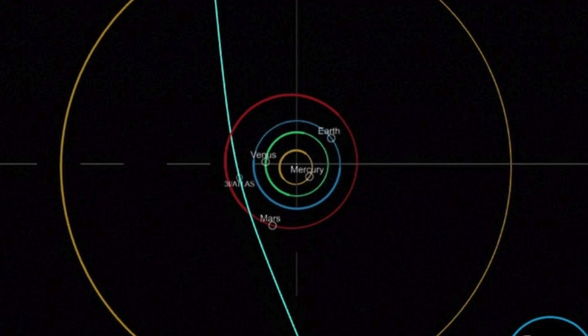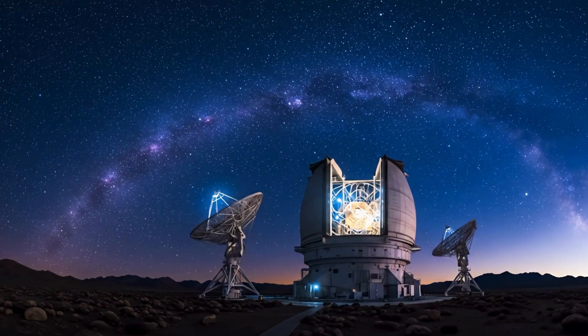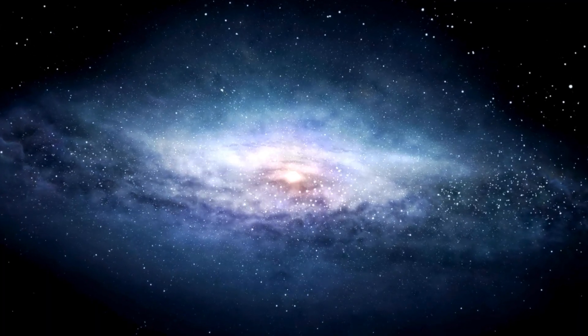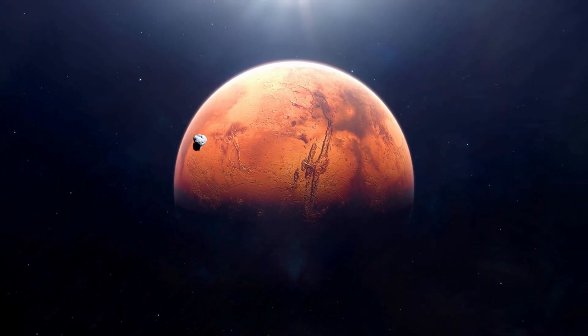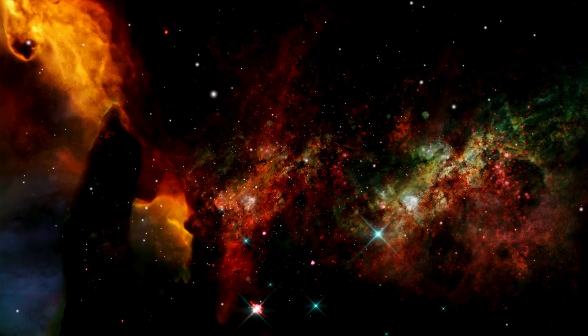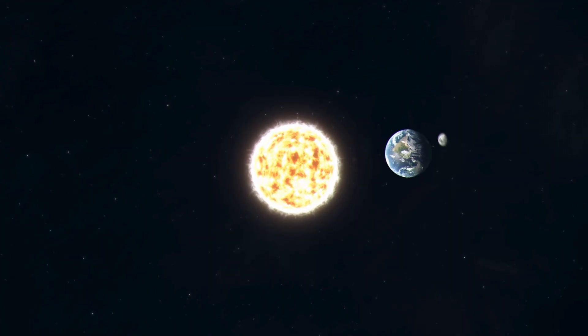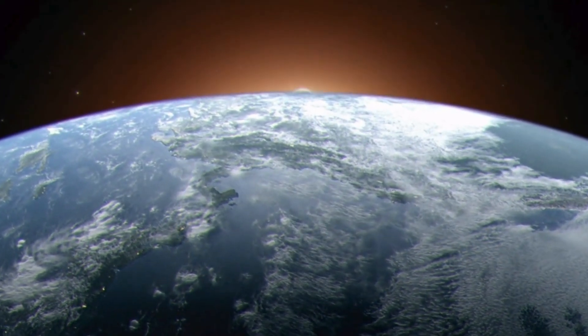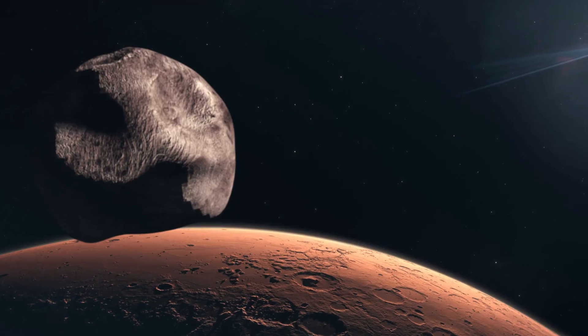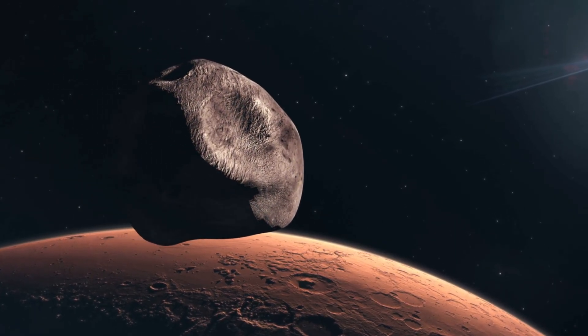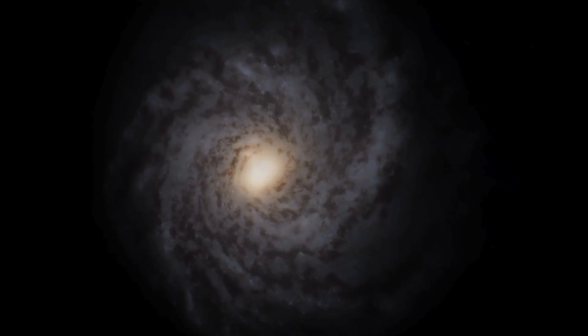Right now, 3I-Atlas is making its closest approach to the sun, a moment astronomers call perihelion. This peak happens on October 29th when the comet passes within about 210 million kilometers of our star. To put that in perspective, scientists often use astronomical units, or AU, where 1 AU is the average distance between Earth and the Sun, about 150 million kilometers. So, 3I-Atlas reaches perihelion at 1.4 astronomical units just inside Mars's orbit. That's not super close in cosmic terms, but it's the hottest this object will get during its visit.